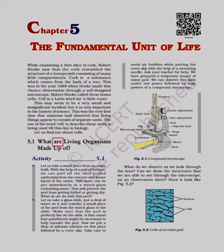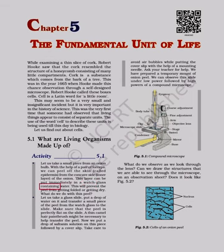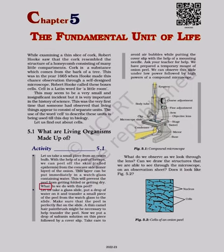5.1 What are living organisms made up of? Activity 5.1: Let us take a small piece from an onion bulb. With the help of a pair of forceps, we can peel off the skin called epidermis from the concave side — the inner layer of the onion. This layer can be put immediately in a watch glass containing water. This will prevent the peel from getting folded or getting dry.